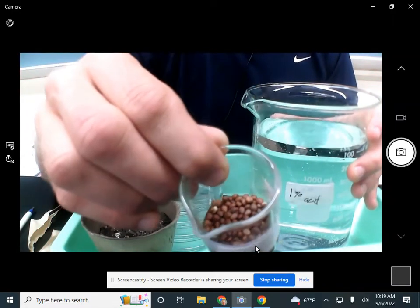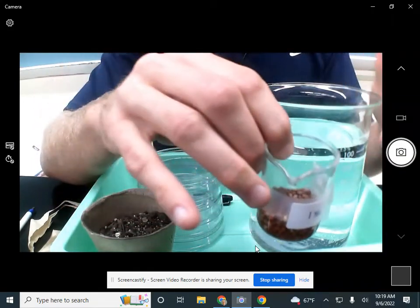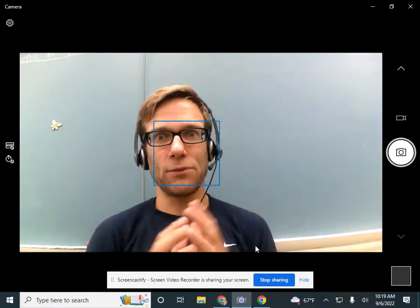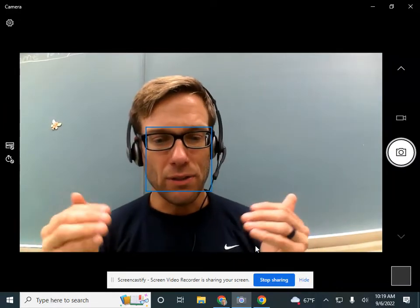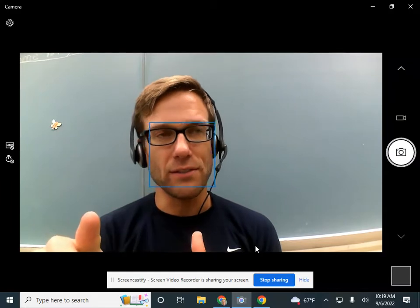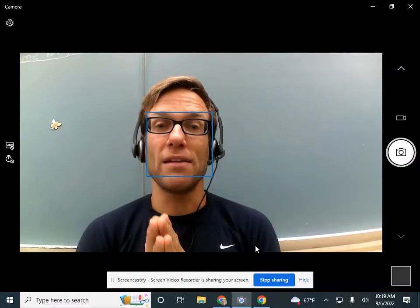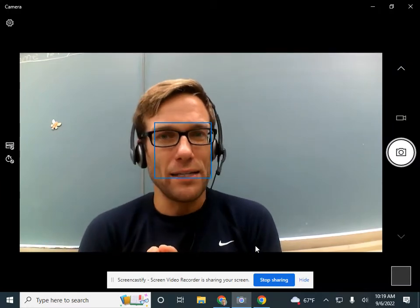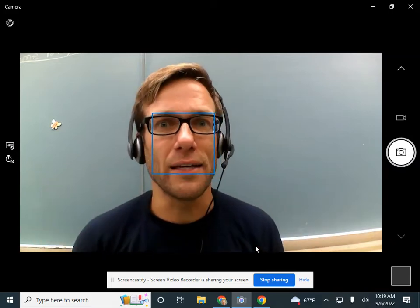Seeds look dead. Germinate means they break that dormancy because they're not really dead and they start to grow. That's what germination means. So we're going to investigate the germination of radish seeds. Radish seeds germinate very quickly. That's why we're using radishes instead of sunflowers or something like that.